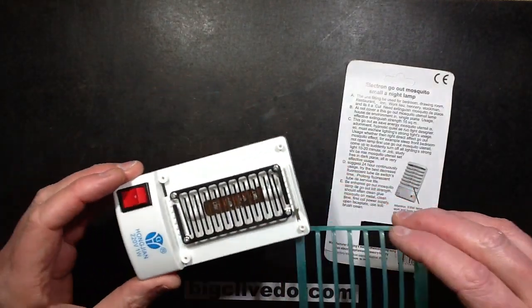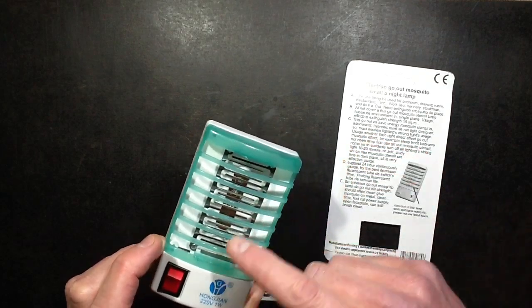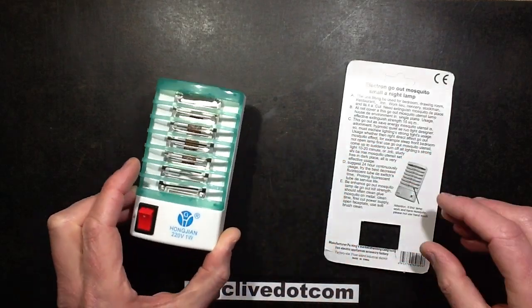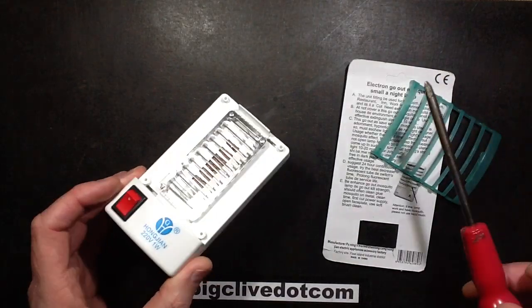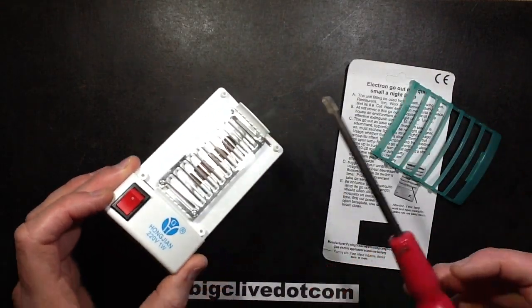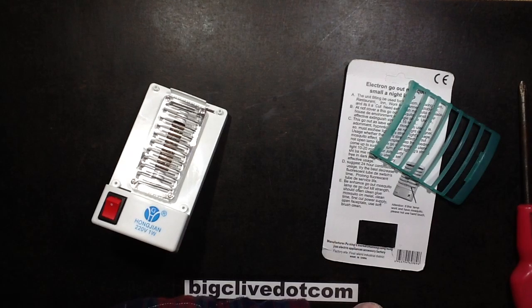Okay, right. This is a Chinese insect killer thing that attracts insects with blue LEDs and has an electrified grid. I was just playing about with it, shorting out the grid with a screwdriver because the cover just comes off. It made a bit of a bang and lots of smoke came out of it.